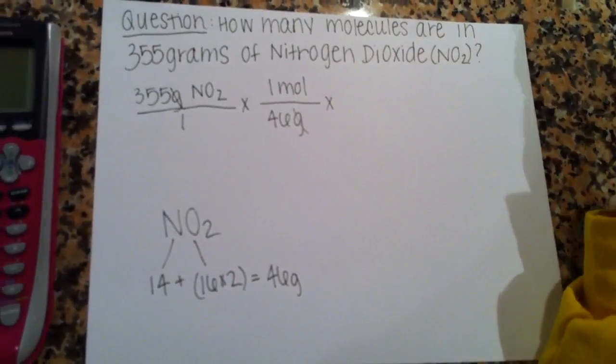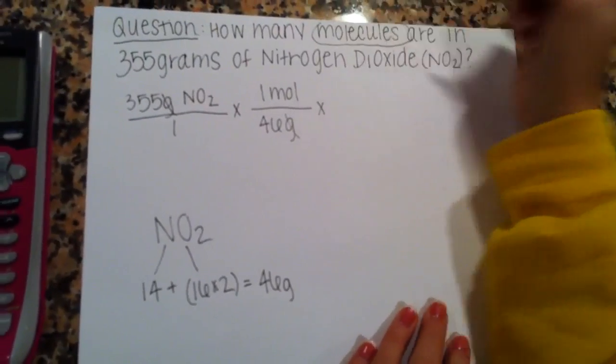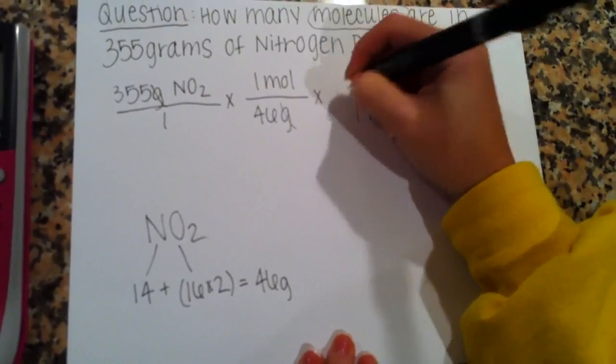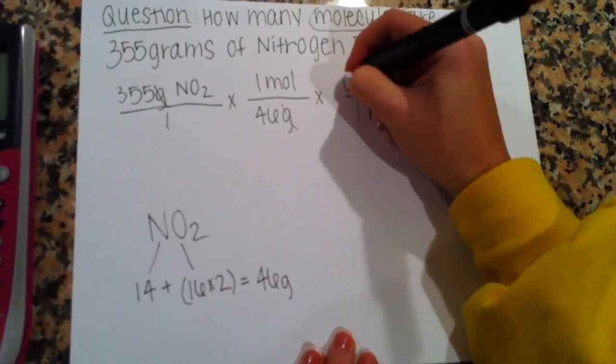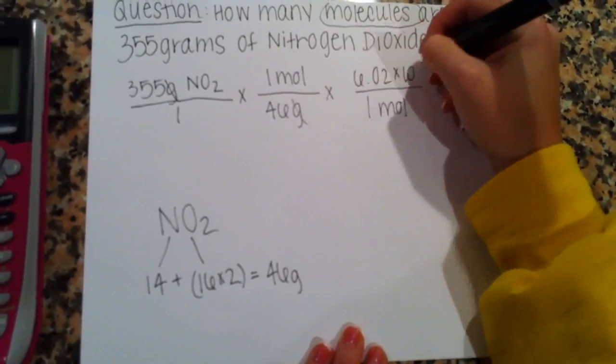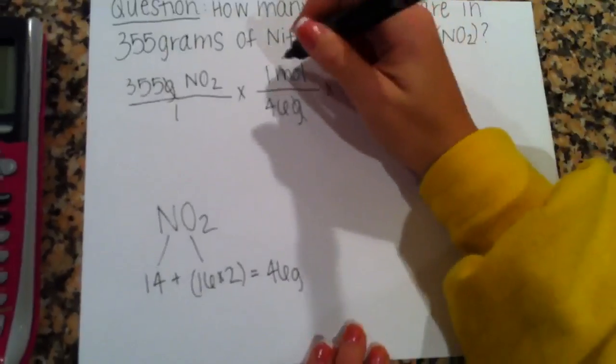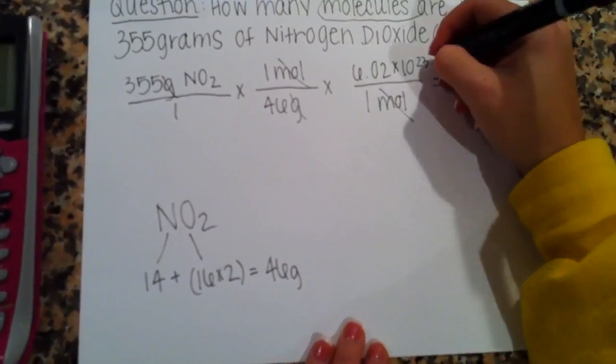Now we have to cancel out the mole in order to get molecules. So now we put the mole at the bottom and we multiply by 6.02 times 10 to the 23rd. And now our moles cancel out and we are left with our molecules.